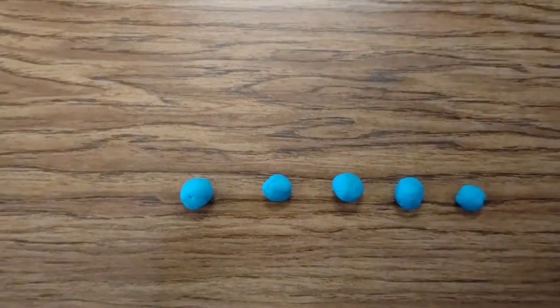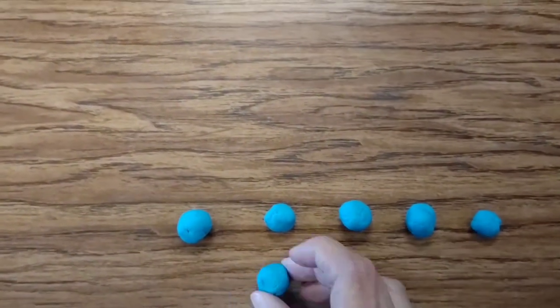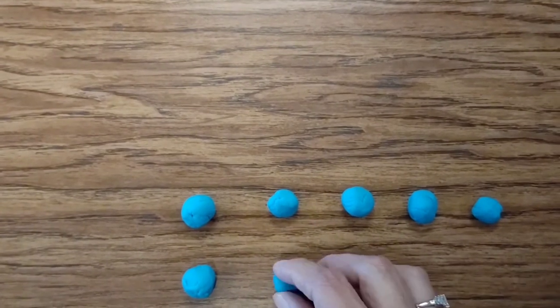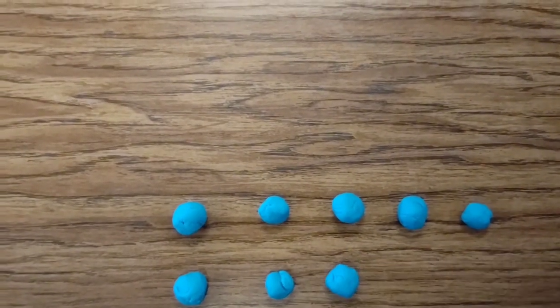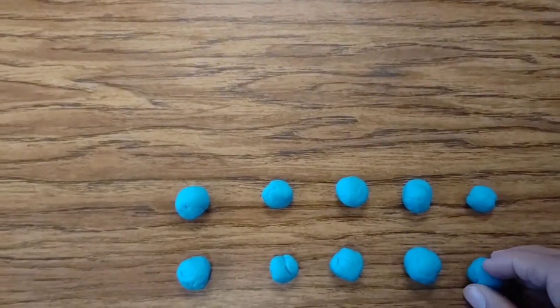five. Now because it's two times five we need two rows. One, two, three, four, five.